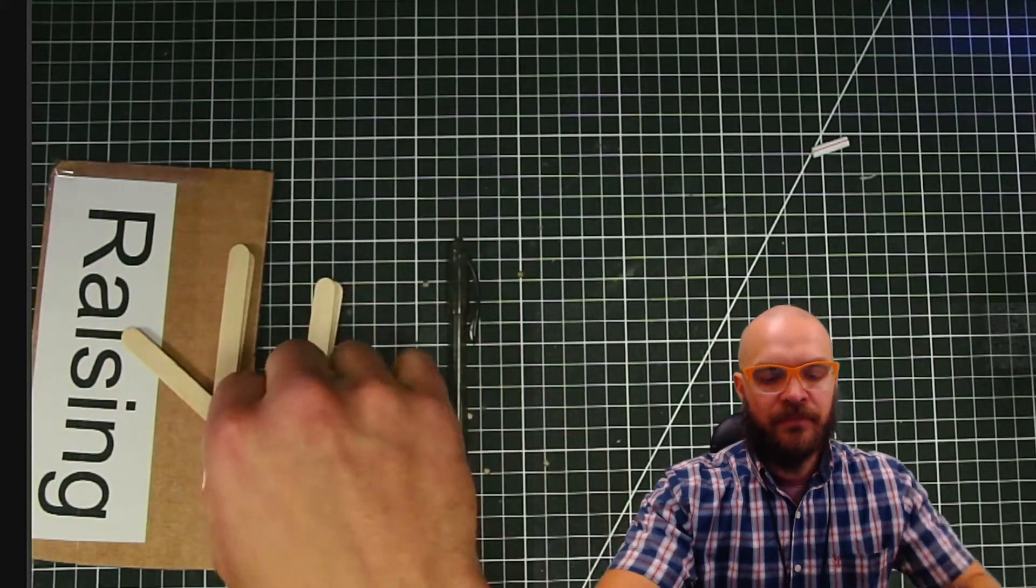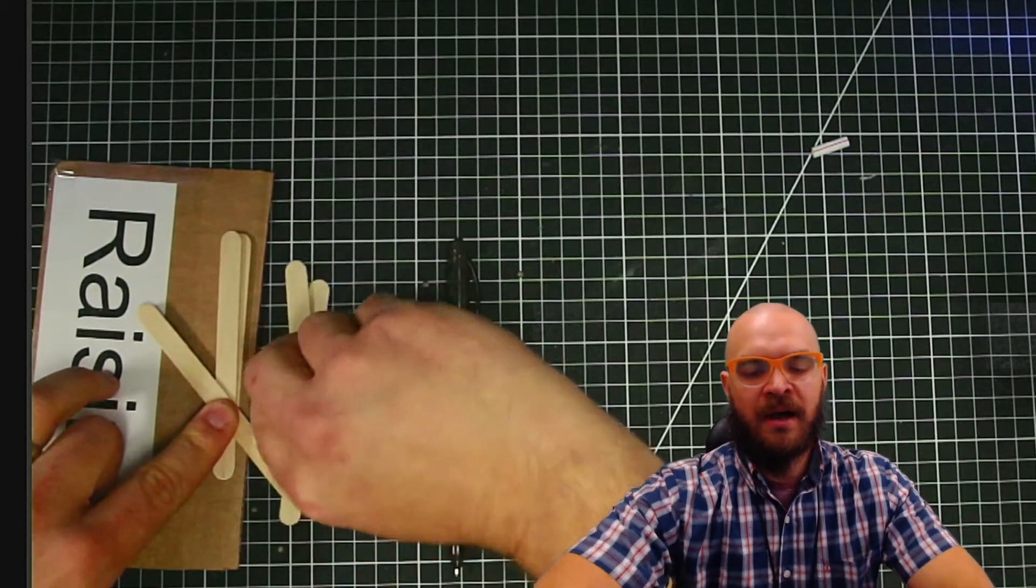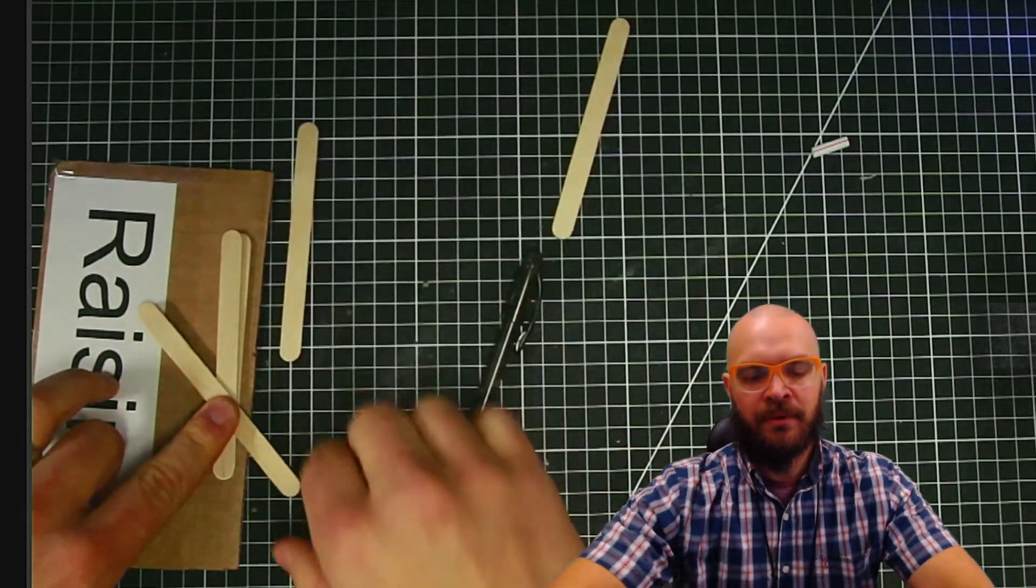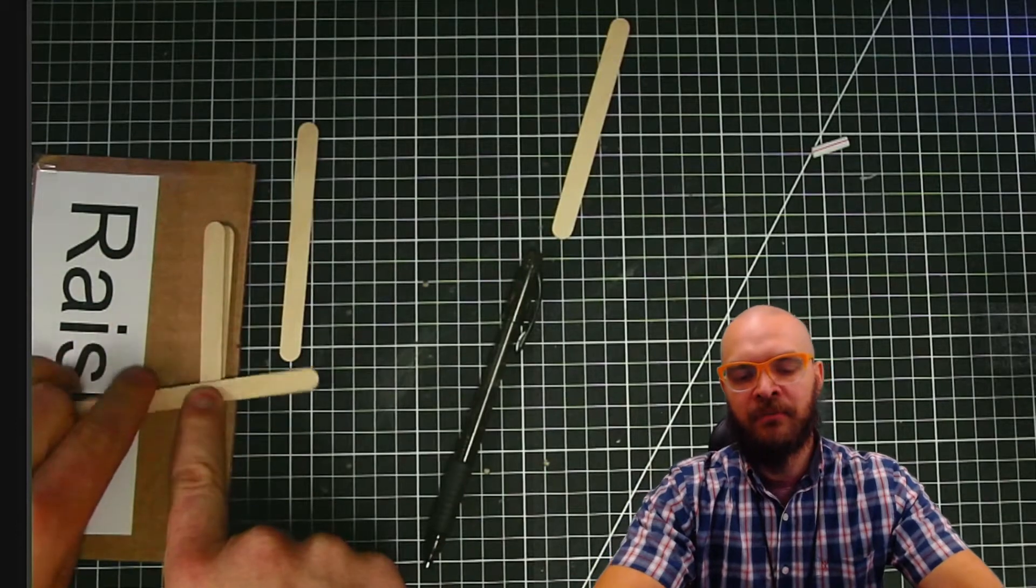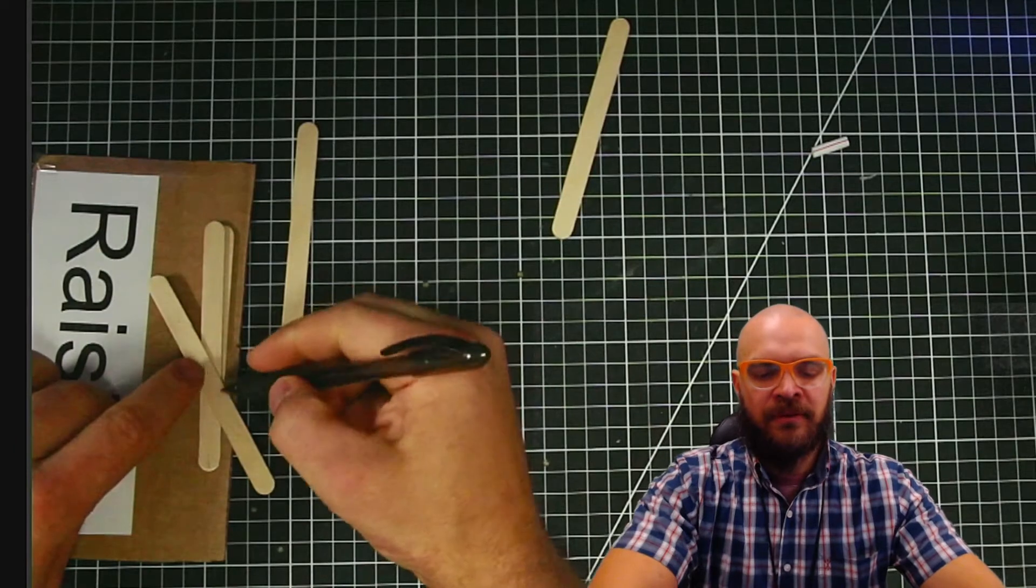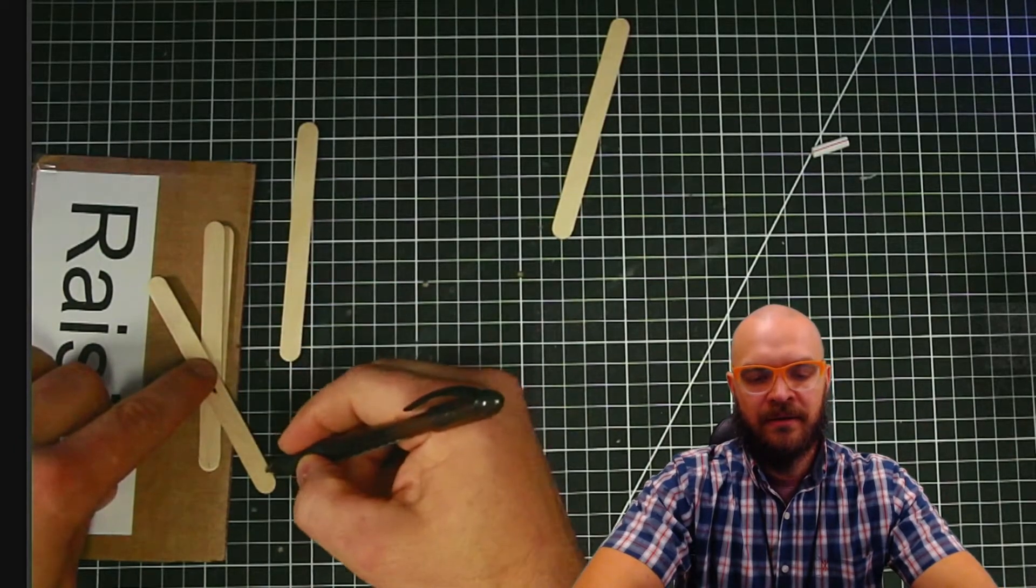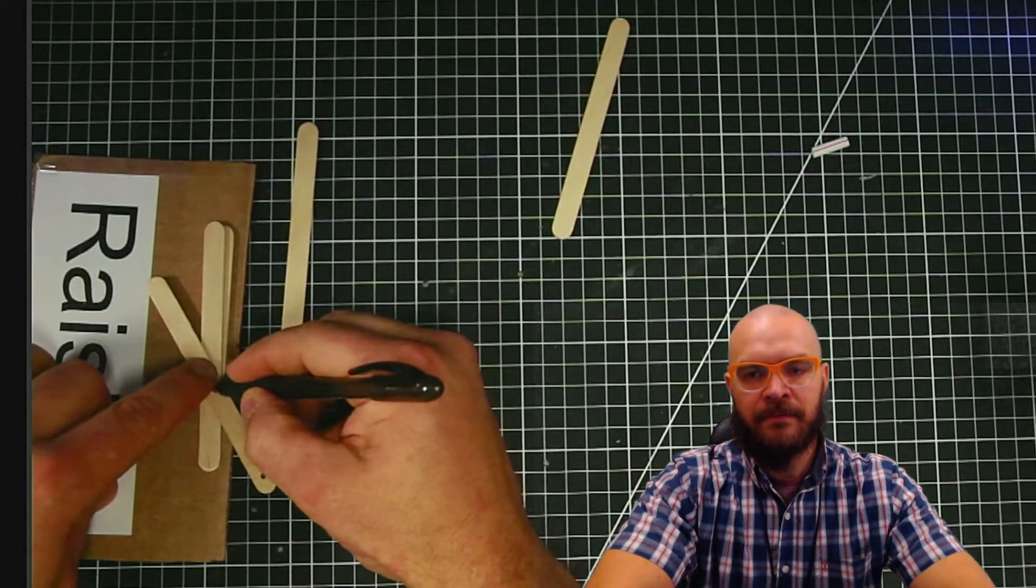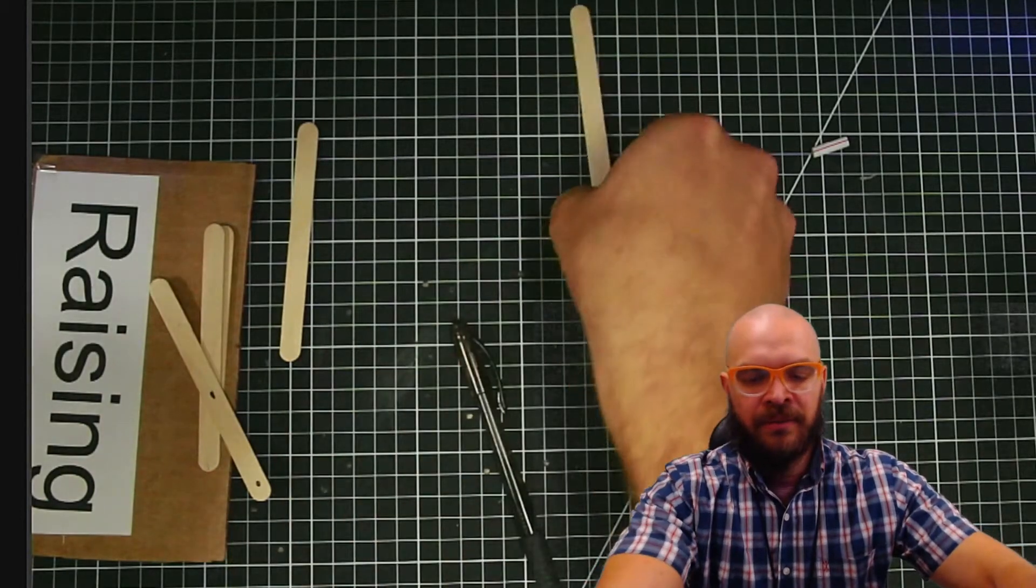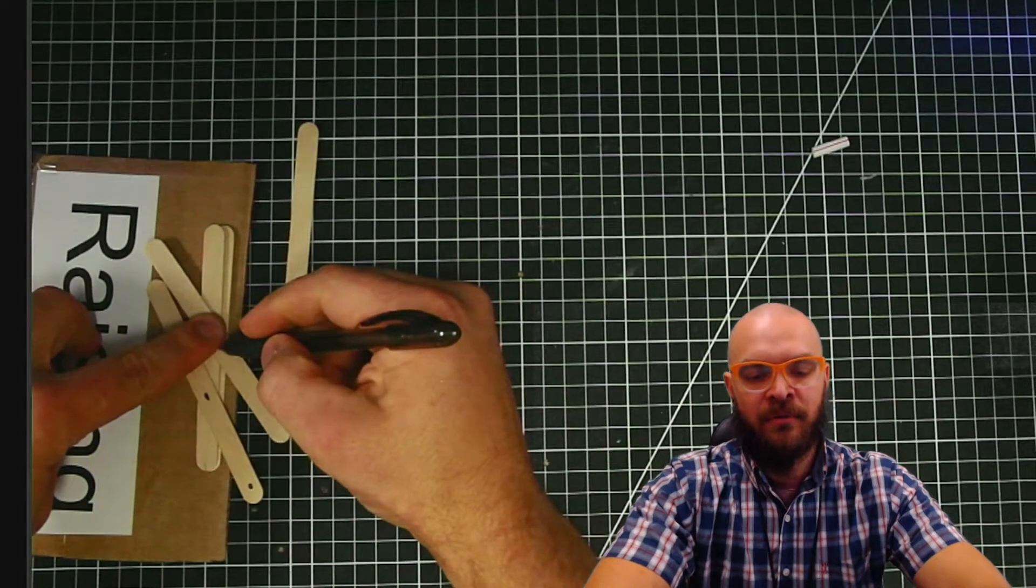So the first thing will be, well, when it's down, it's going to look like this. When it's up here, when it's up, this will have moved up to here. So this is going to need holes here and here. The other one, the one that's going to match it, should have the exact same holes there and there.